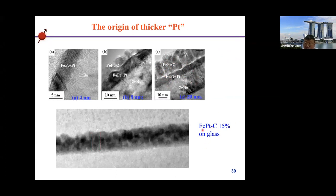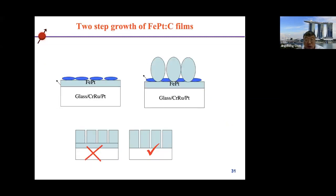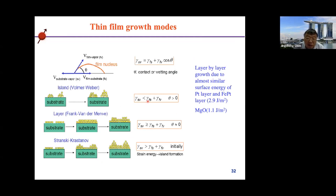When we deposit these films on glass, we do not find the continuous intermediate Pt film. This indicates the interface plays a major role in forming the continuous film — the interface forces the carbon to diffuse out. We propose a model: at the beginning, carbon diffuses out to the surface; with increasing thickness, more carbon accumulates on the surface and starts to form FePt:C composite; eventually they form isolated column structures. The desired structure is isolated grains, not the continuous film. So we need to review the thin film growth modes.